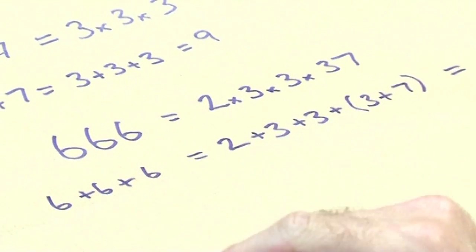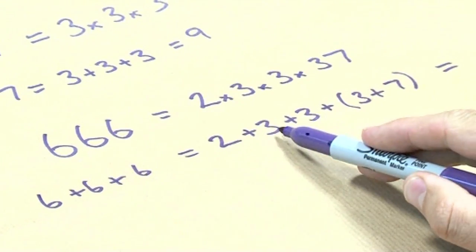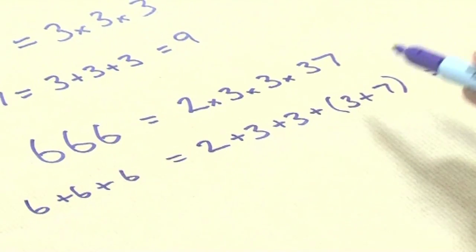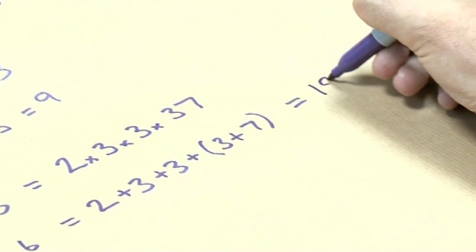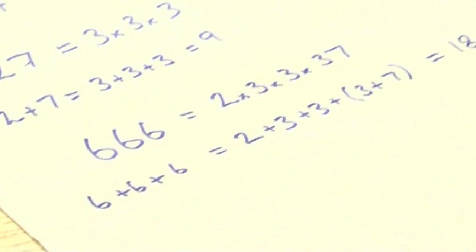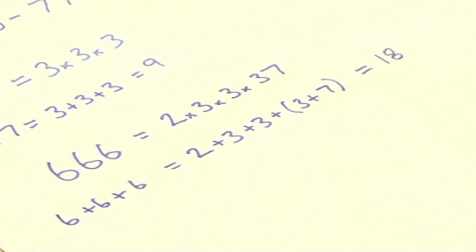And hopefully this works. 6 plus 6 plus 6 is 18. 2 plus 3 is 5, plus 3 is 8, plus 3 is 11, plus 7 is 18. And so that's why 6, 6, 6 is also a Smith number.